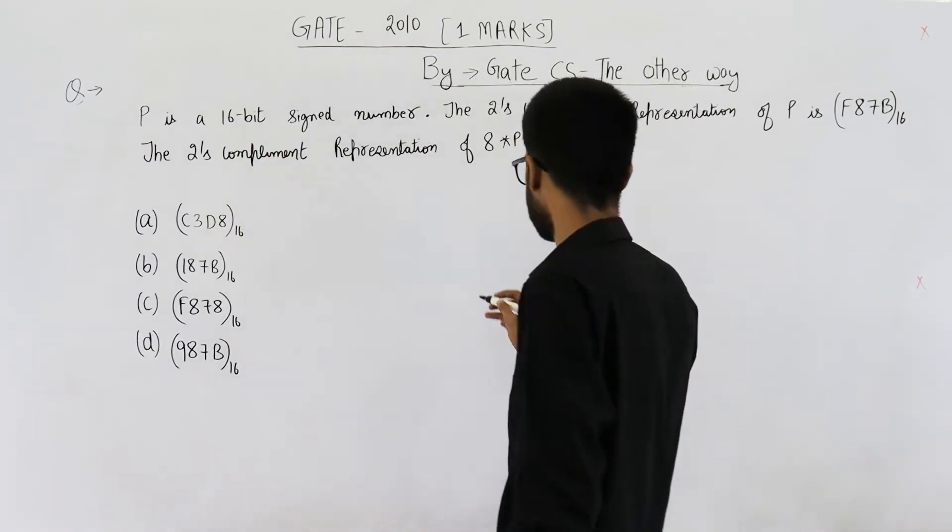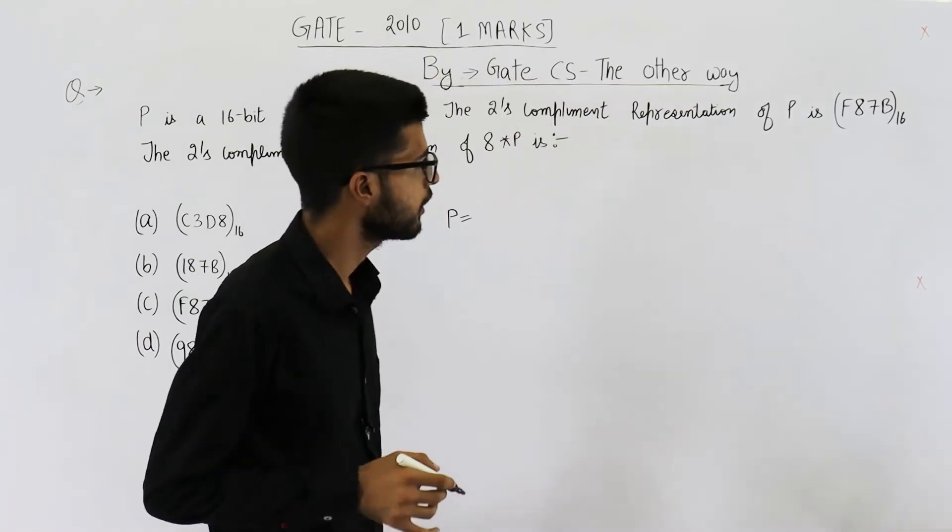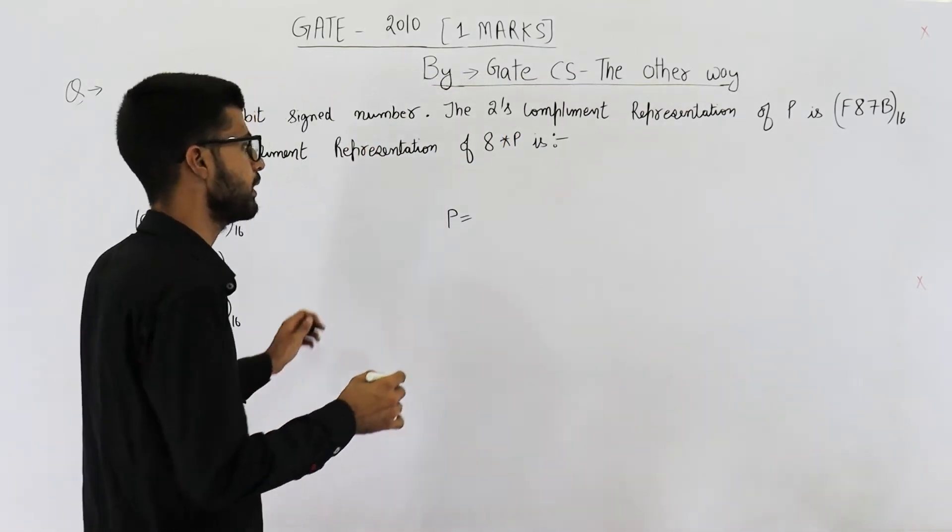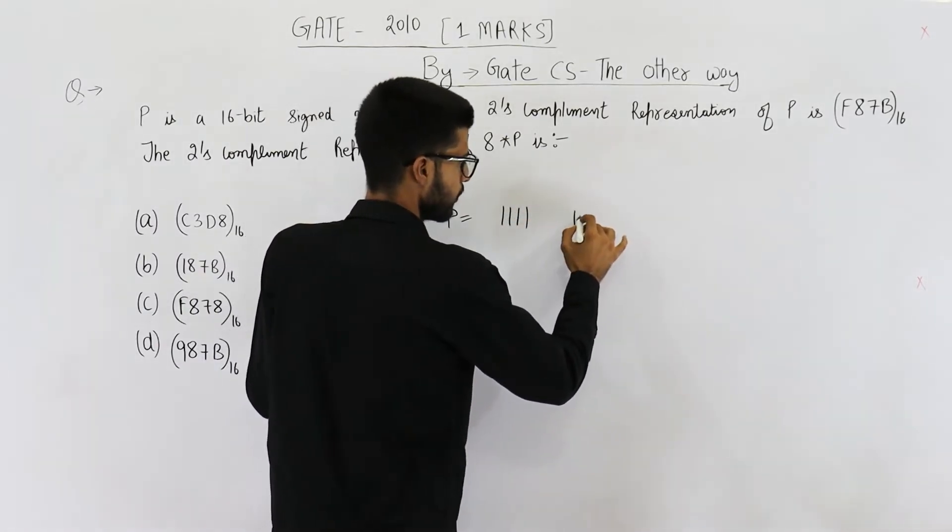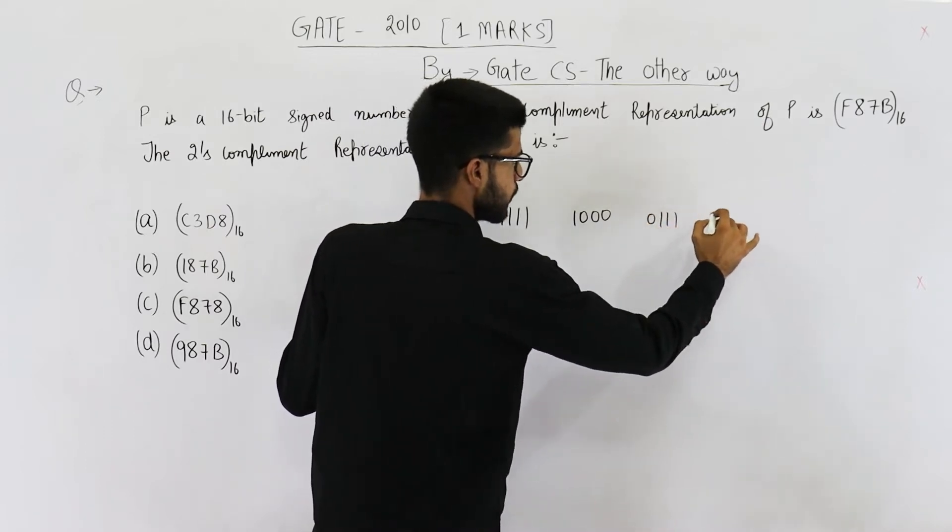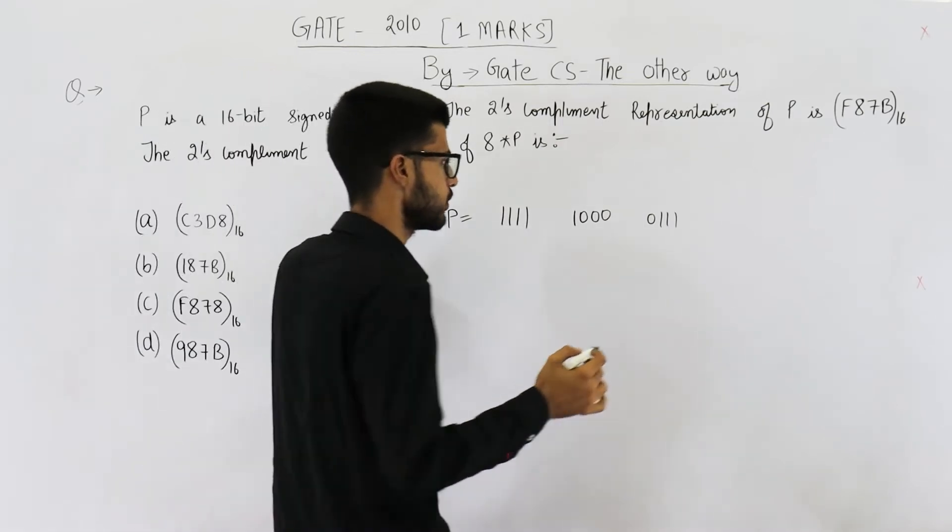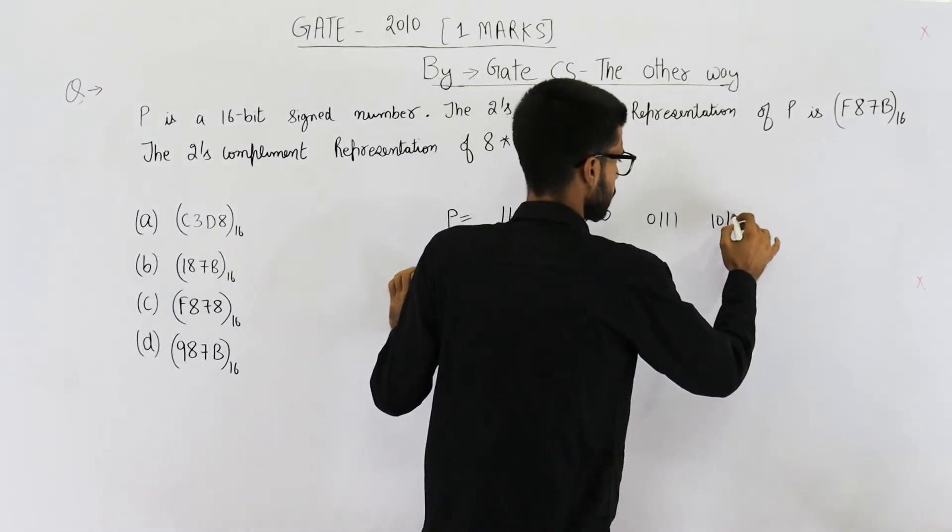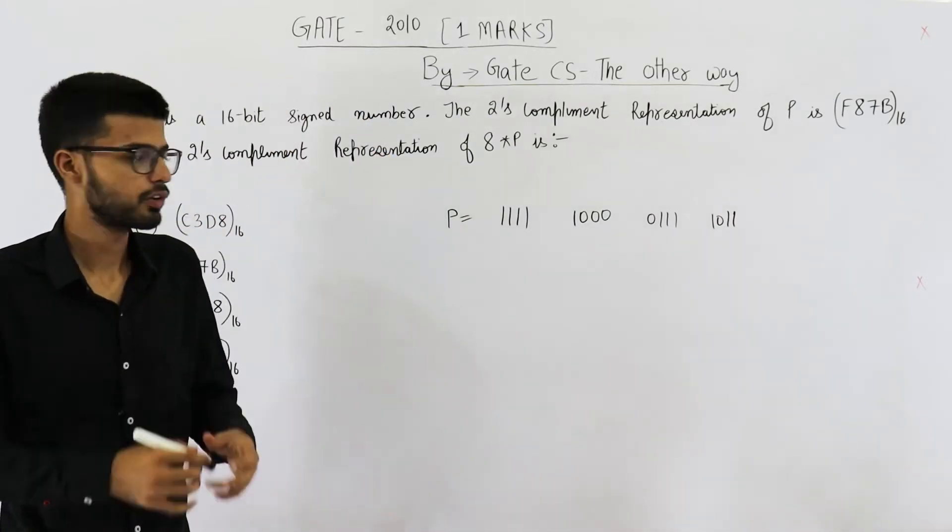So first thing is P is F87B. F means all 1's. 8 means 1 triple 0. 7 means 0 triple 1. And B is 11. 11 means 1011. So this is P, the binary representation of P.